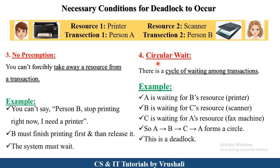The last condition is circular wait. Here there is a cycle of waiting among all transactions. For example, person B uses a printer, person C uses the scanner, and person A uses the fax machine. Now: A is waiting for person B's resource (printer), B is waiting for person C's resource, and C is again waiting for person A's resource. So A waits for B, B waits for C, and C waits for A — forming a cycle. This is also called deadlock. These four conditions are necessary for a deadlock to occur in a database.